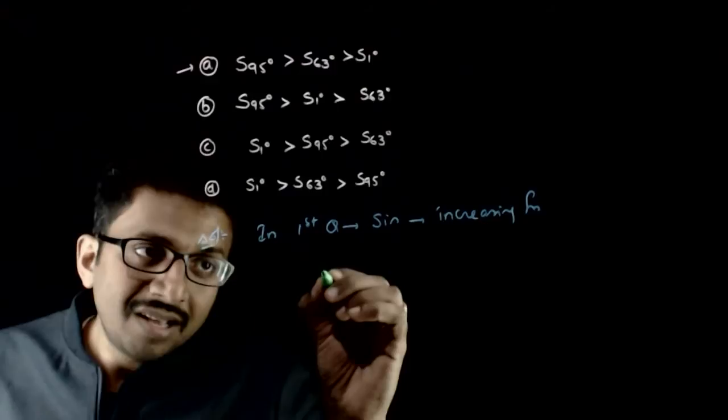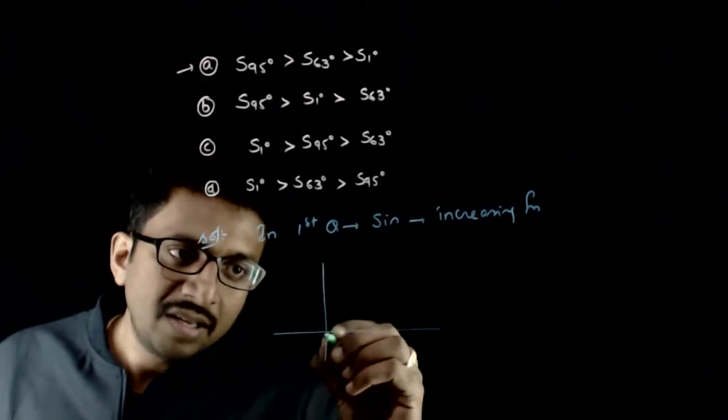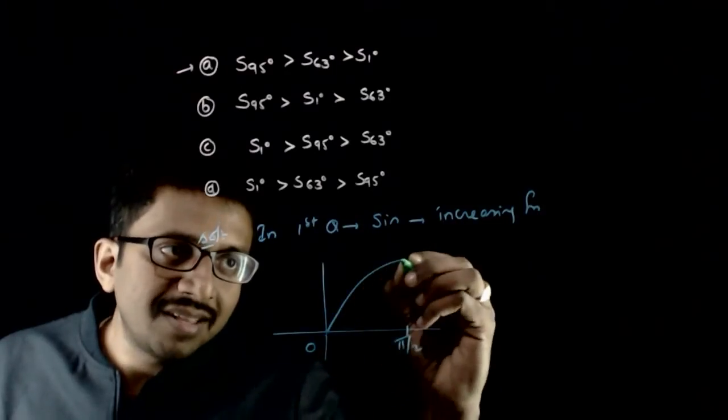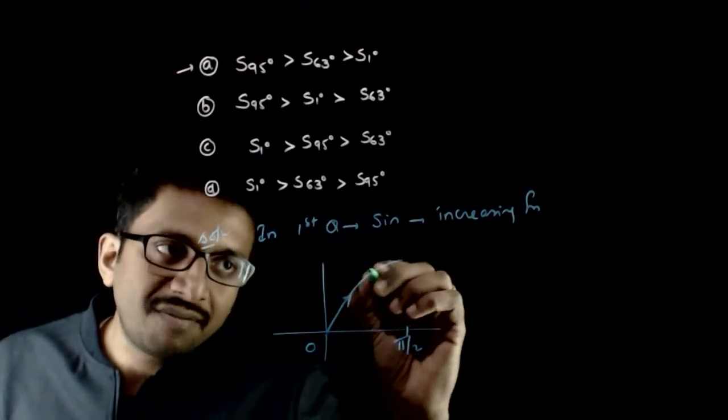Now, what does that mean? If you see from the graph, in the first quadrant, that is, in between 0 and pi by 2, the graph of sin x looks like this. It is always increasing in the first quadrant.